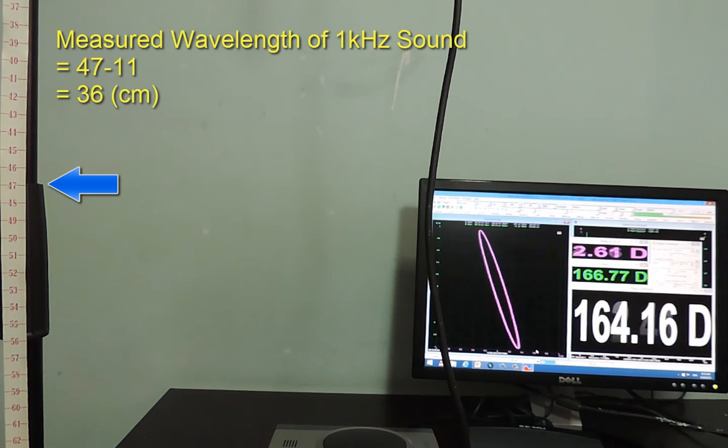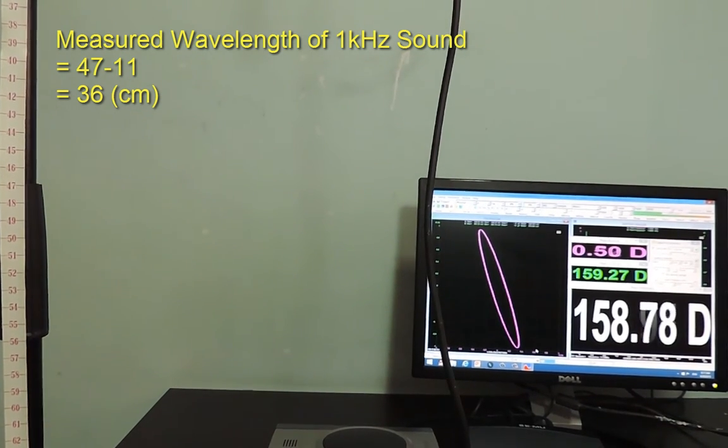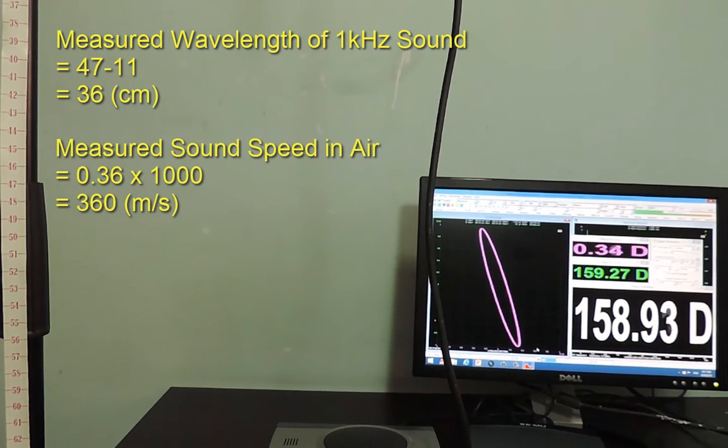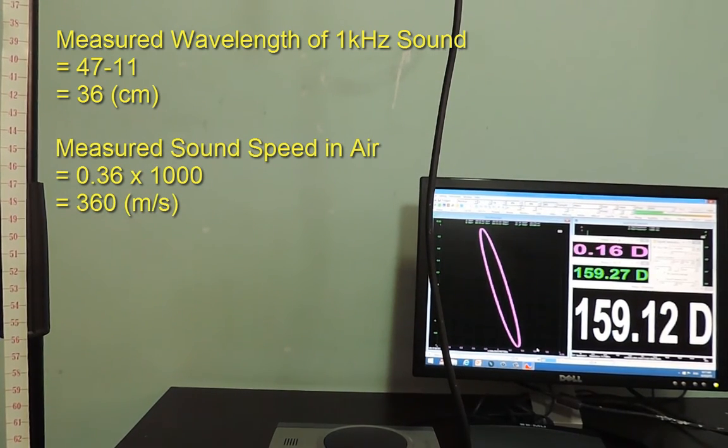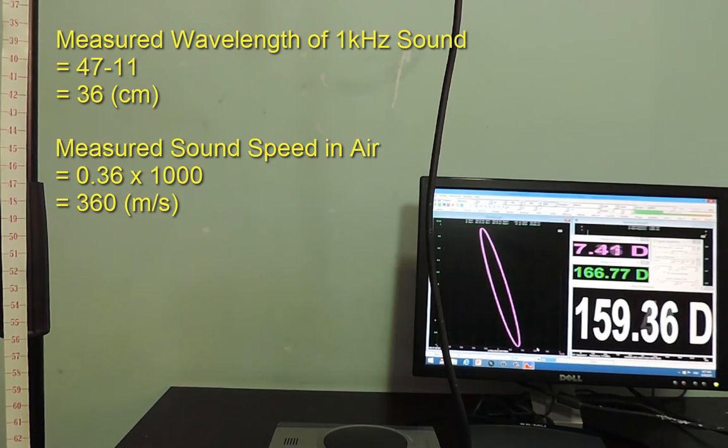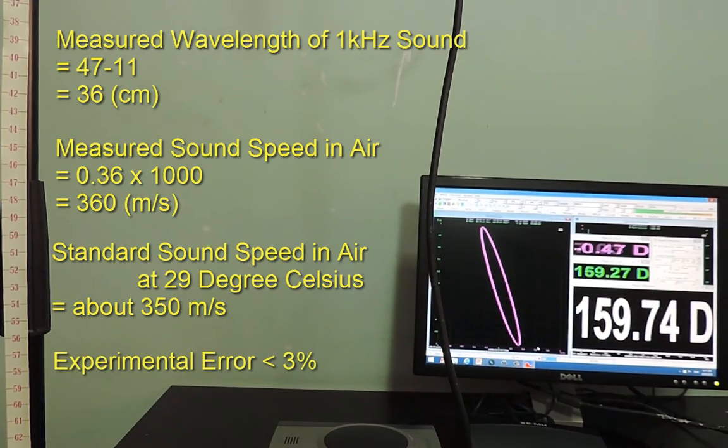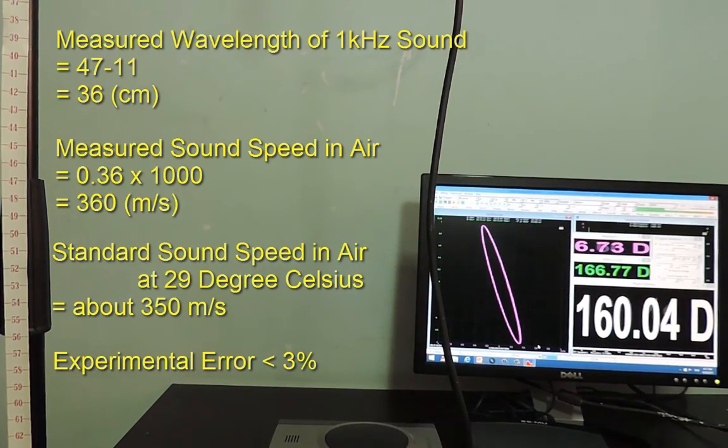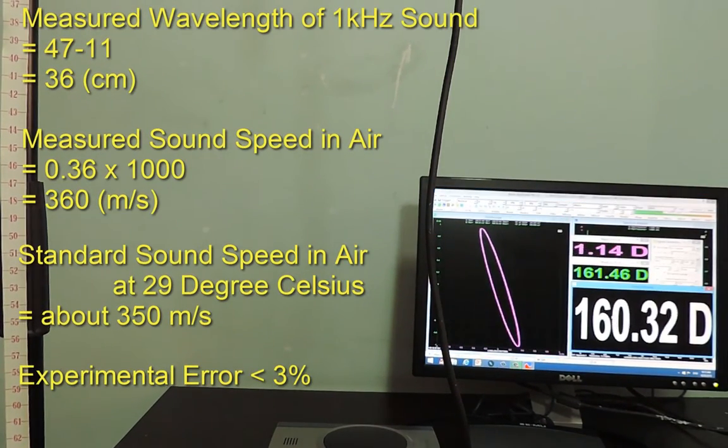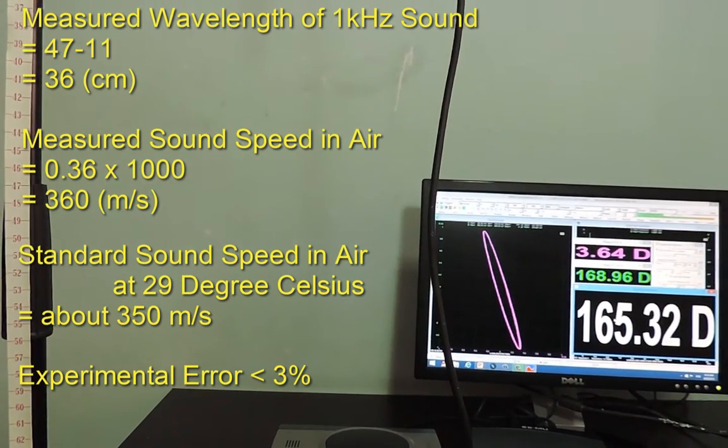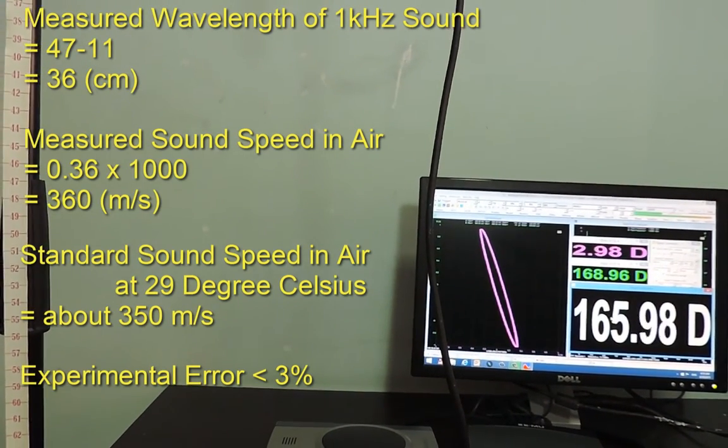Thus the wavelength of the 1 kilohertz sound is 36 centimeters. This gives a sound speed of 360 meters per second. The sound speed in air varies with temperature. The current temperature is about 29 degrees Celsius which gives a standard sound speed of about 350 meters per second. So, the experimental error is less than 3%. Not bad.